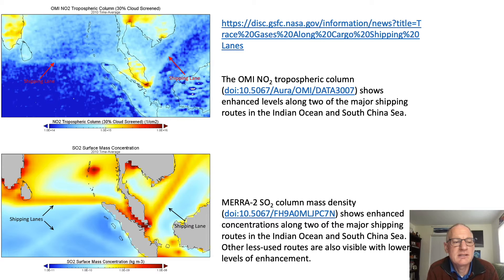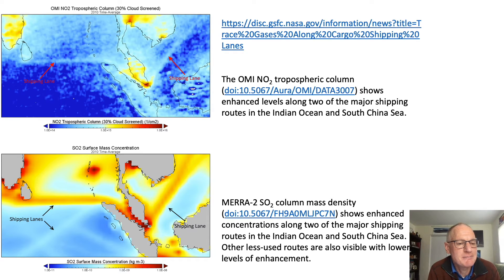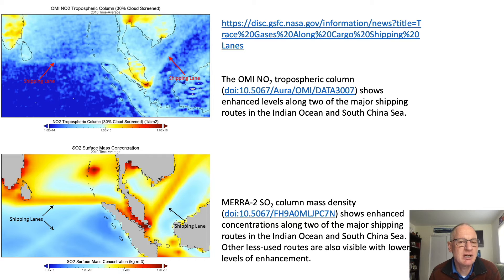It is more difficult to see air pollution over the water than it is over land, simply because the water is darker and absorbs more sunlight, so less is reflected back to space. Also, sometimes the shipping lane is near a continent and so some of the pollution from the continent will also get mixed in. This is a subtle signal compared to signals like a large city, but with careful analysis the shipping signals can be seen.